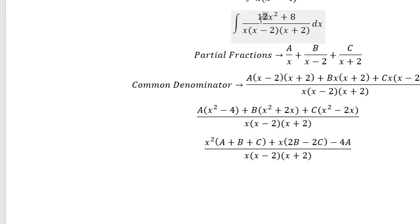We have 12x squared, that means A plus B plus C equals 12. We don't have an x term, so 2B minus 2C equals 0. And we have constant 8, that means negative 4A equals 8. Now we have a system of equations.